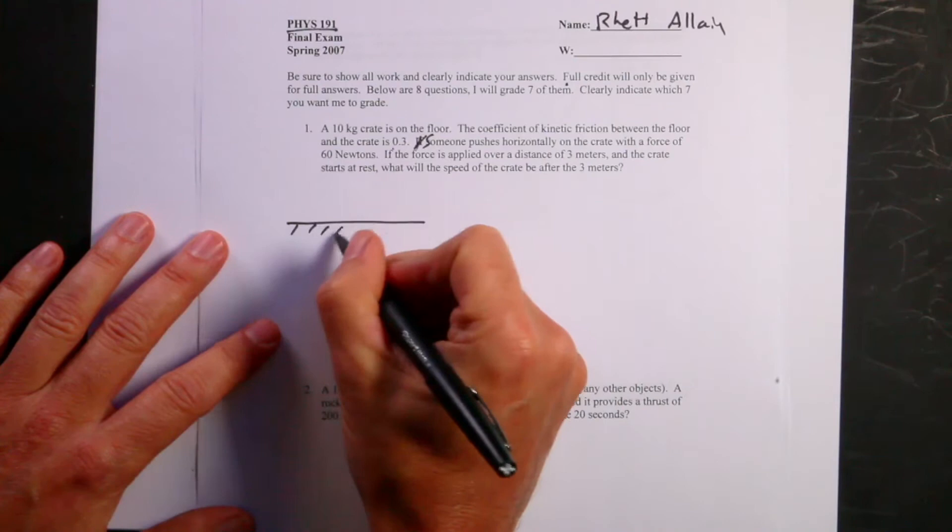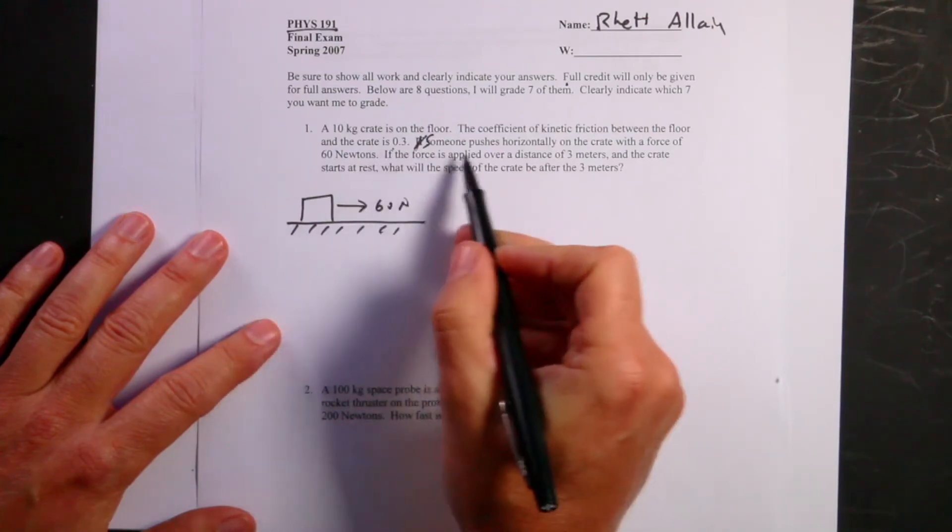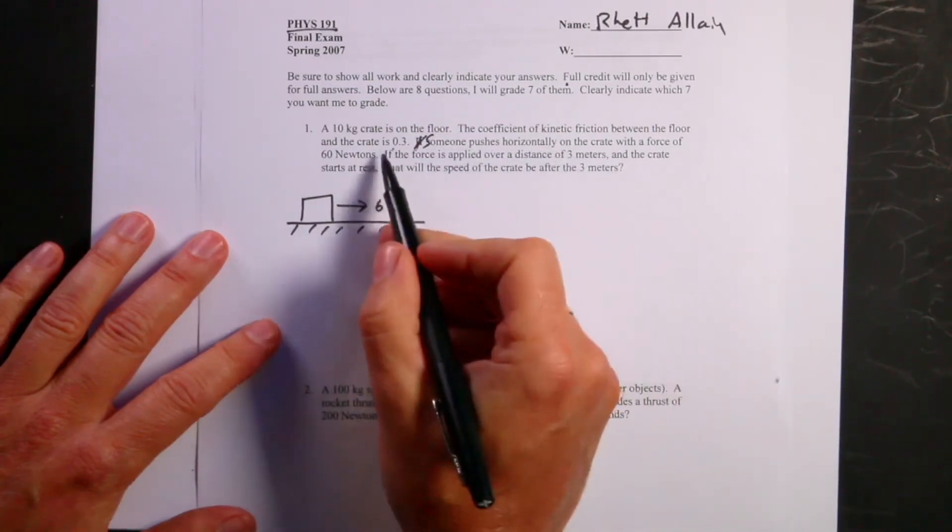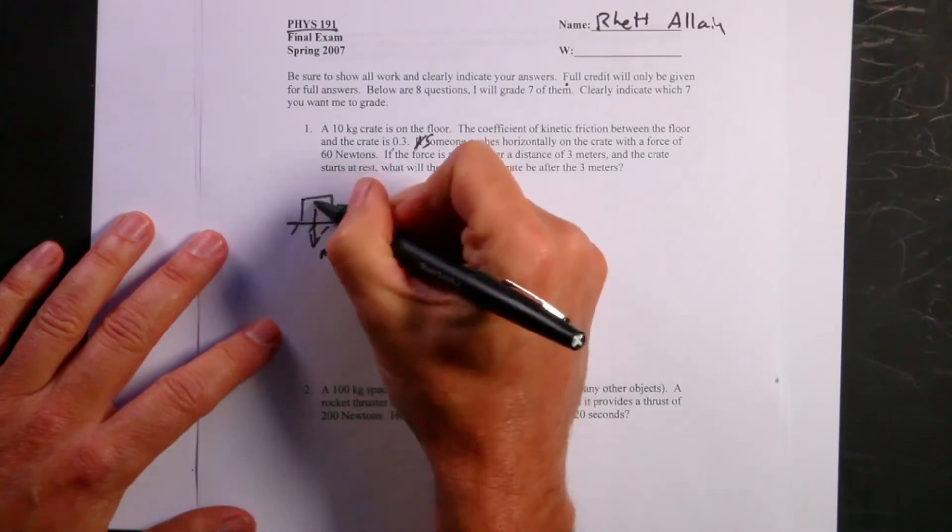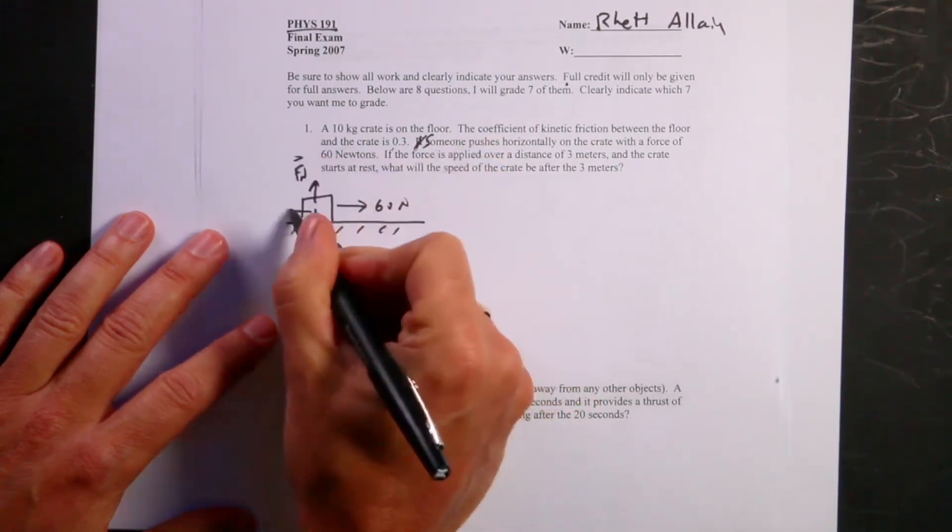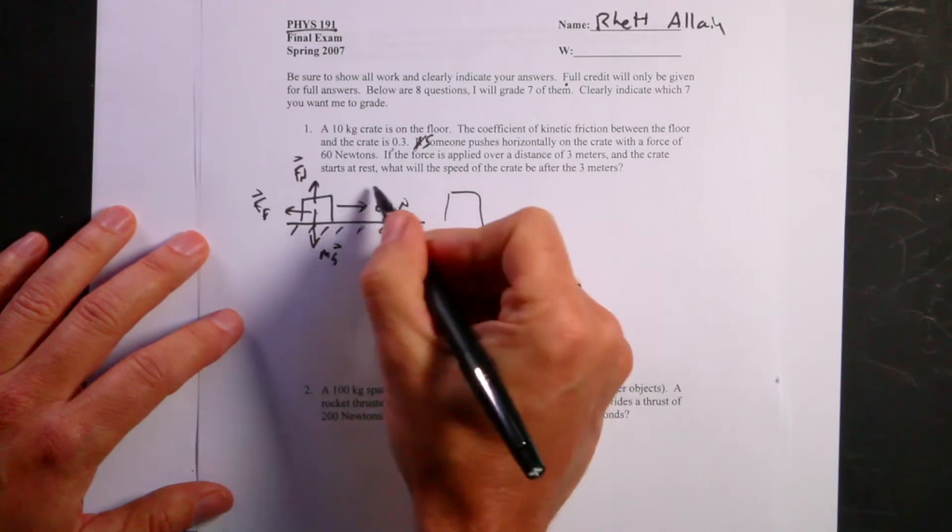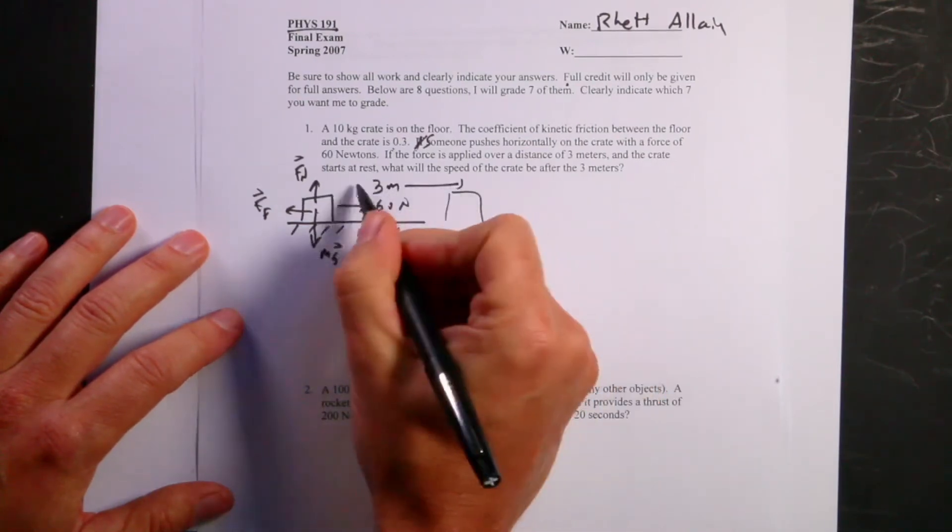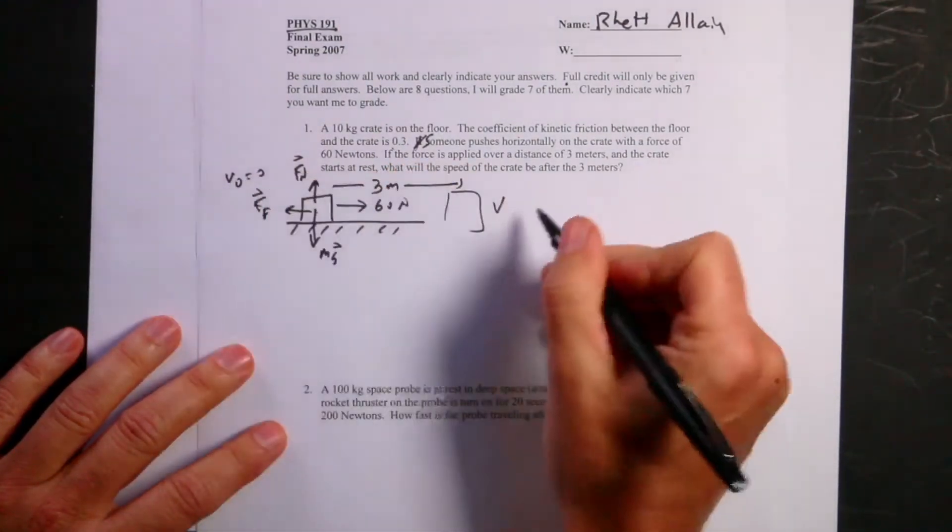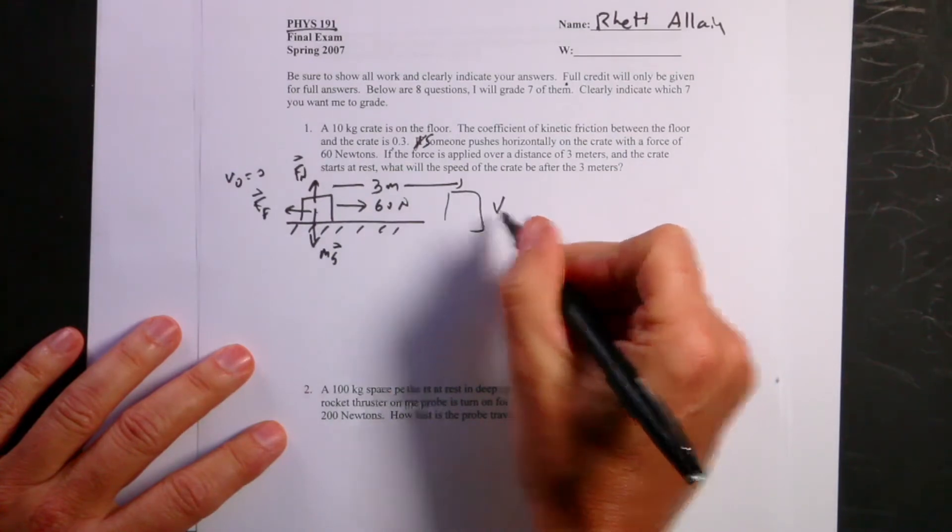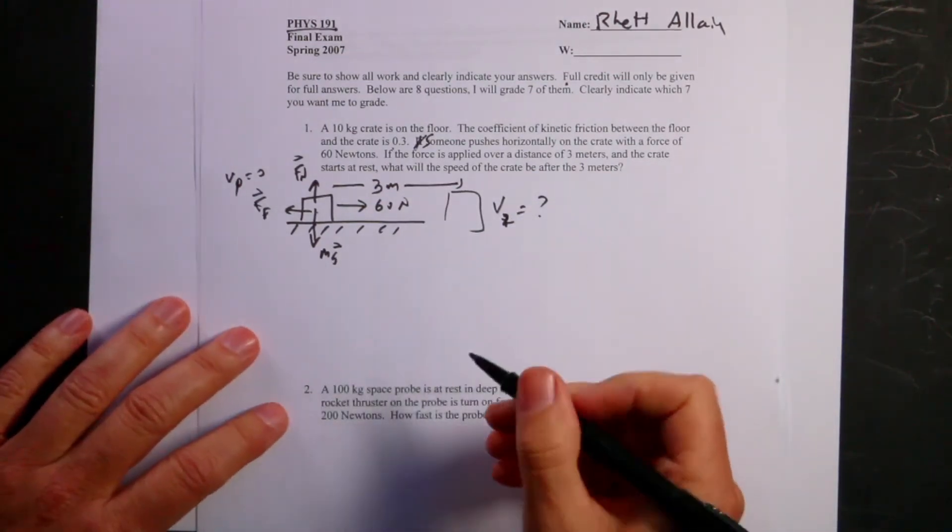So let's draw a picture. Here's my floor and then here is the crate. There's a 60 Newton force, pushes horizontally. Then we have a gravitational force mg, we have a normal force fn, and then there's a friction force pushing backwards ff. It's going to move over here a distance of 3 meters. v0 equals zero, v1, v2 equals question mark.